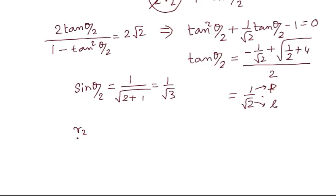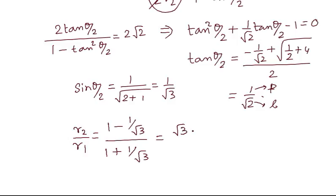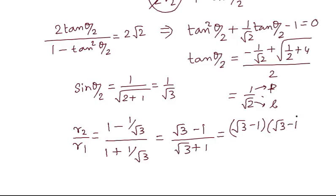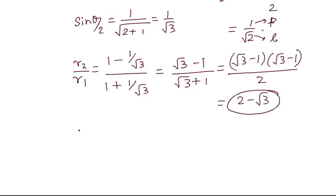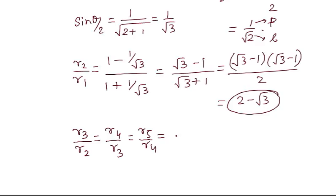The ratio r2/r1 = (1 − sin(θ/2)) / (1 + sin(θ/2)) = (√3 − 1) / (√3 + 1). Rationalizing, we get r2/r1 = 2 − √3. Since r2/r1 = 2 − √3, similarly r3/r2, r4/r3, r5/r4 are all the same constant, and this acts as the common ratio of the geometric sequence.